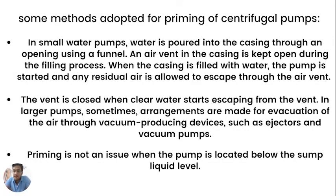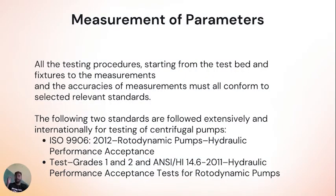Methods for priming of centrifugal pumps: for small water pumps, water is poured into the casing while the air vent is kept open; after completely filling with water, the pump starts and any residual air escapes through the air vent. For larger pumps, air is evacuated through devices such as ejectors and vacuum pumps. When the pump is located below the sump liquid level, priming is not an issue. All testing procedures — from the test bed and fixtures to measurements and accuracy — must conform to selected relevant standards such as ISO 9906:2012 test grades 1 and 2 and ANSI/HI 14.6:2011.